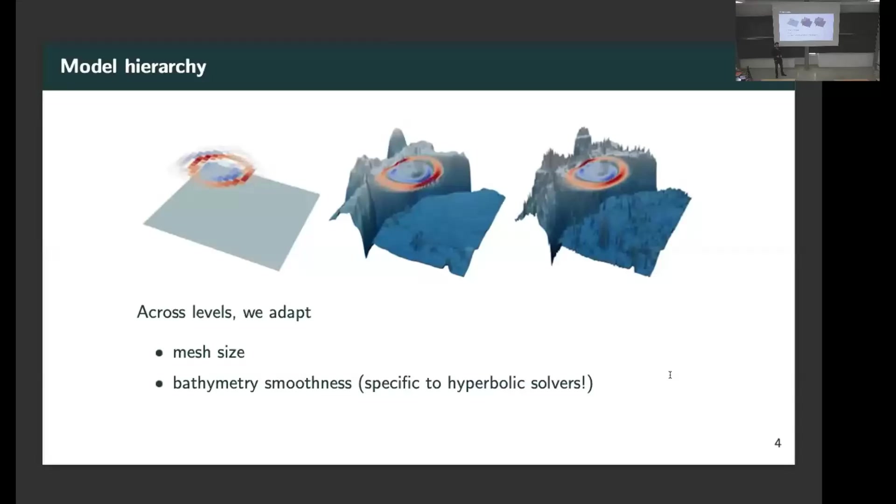The tsunami application that we have, I'm just going to glance over this to give you a brief idea. We built our hierarchy by having a fully resolved shallow water equation of the finest available data of the bathymetry of the coast of Japan. For coarser levels, we're doing the obvious thing coarsening the mesh. But there's also something specific to hyperbolic solvers, which can be interesting. Namely, we are smoothing the bathymetry in order to get rid of some small islands that were actually causing issues to the solvers as well.